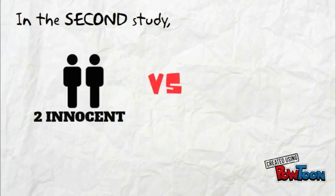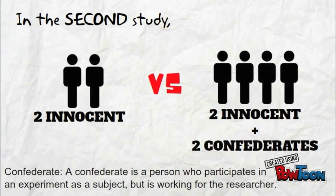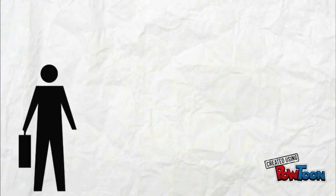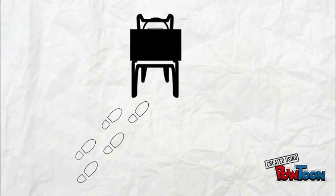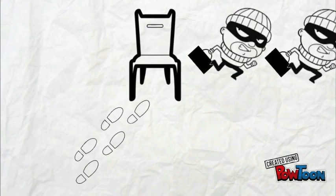In the second study, there were two groups of bystanders, one consisting of two innocent bystanders and the other consisting of two innocent and two confederate bystanders. In this experiment, a bag owner was first sent to leave his bag on a check, after which a thief was sent to steal the bag.